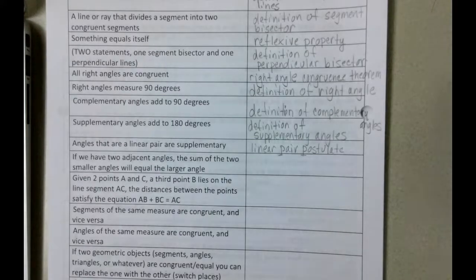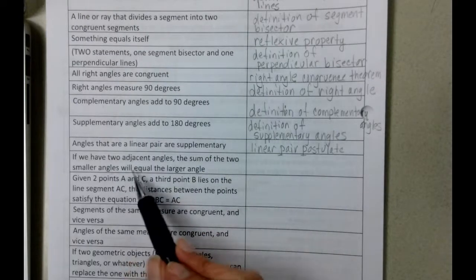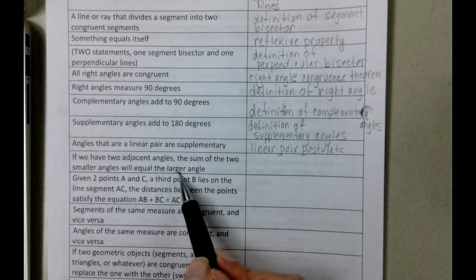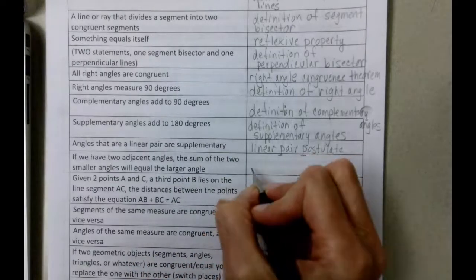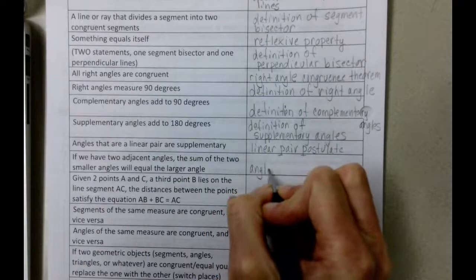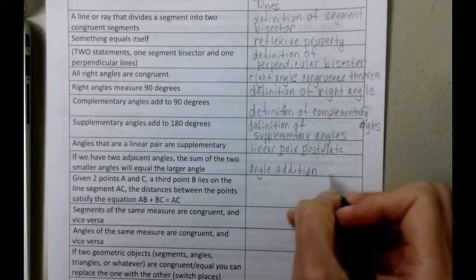If we have two adjacent angles, the sum of the two smaller angles will equal the larger angle. Well that is the angle addition postulate.